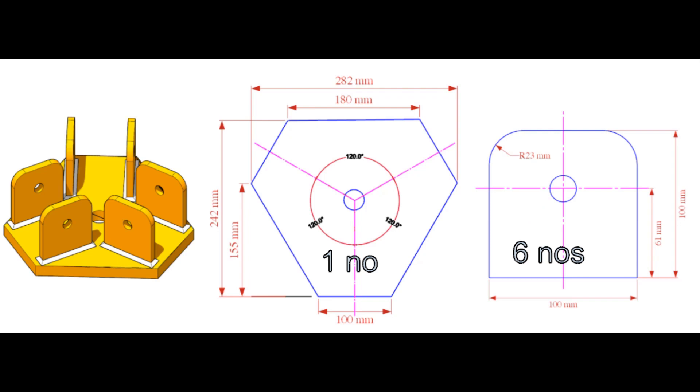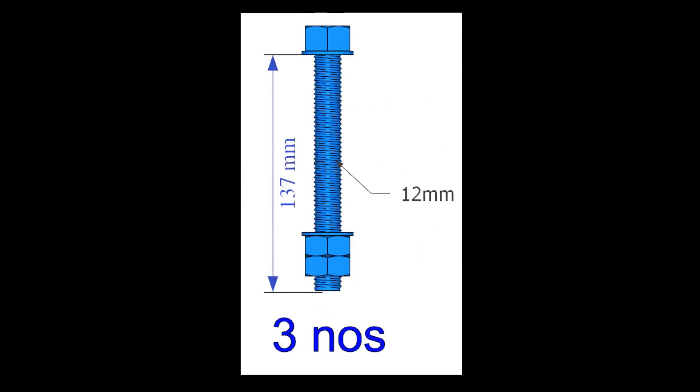The hole diameter on the rib is 15mm. 12mm diameter bolts, 3 numbers, for assembling the legs with the bearing plate bracket.